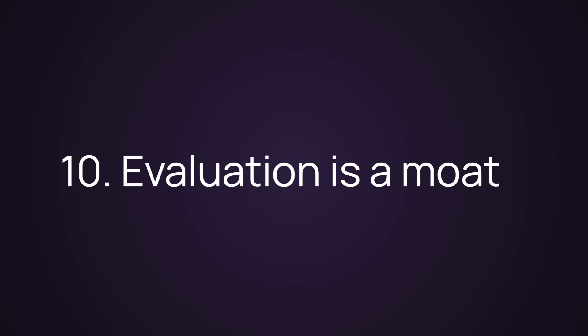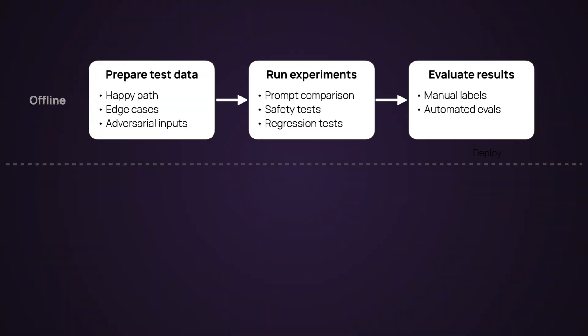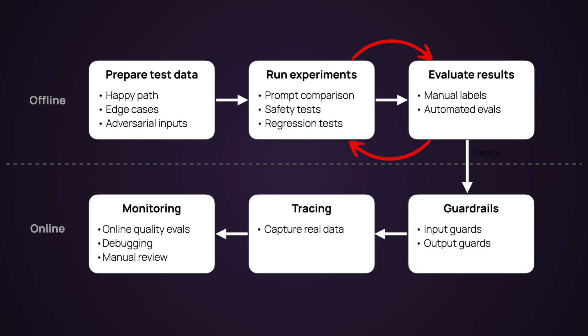If it sounds like building a solid evaluation system takes time, well, it does — but it's time well spent. A good evaluation system is actually a competitive advantage. It is like a living product spec which implements what 'good' means for your use case in code and datasets. This lets you move faster — you can run experiments, compare different prompts, and test new models as they come out in hours, not days. You can ship with confidence, knowing if something will break after a change. And it helps you build trust with your users, especially in high stakes and high risk domains. This creates a continuous improvement loop where every stage, from early experiments to live monitoring, helps you get better. And over time, this can become a moat — everyone has access to the same models, but you can have access to good labeled data, sharp tests that discriminate between good and bad, and product insights that not everyone has.